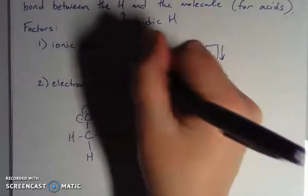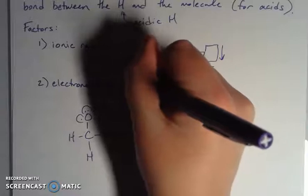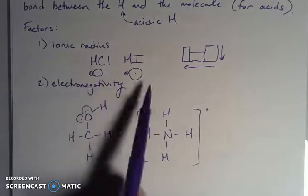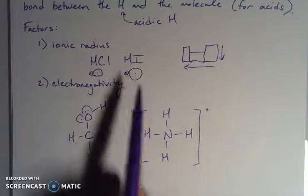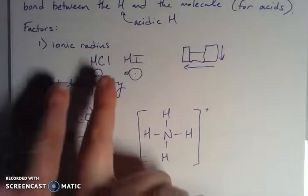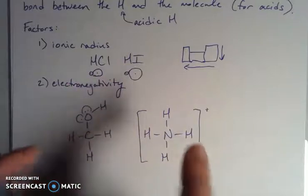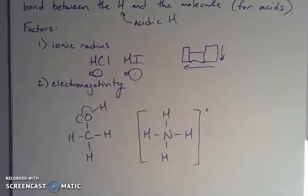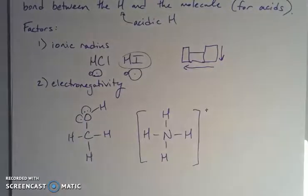This attraction happens because of overlapping orbitals, but if I have more distance between them, it's going to be easier to split these apart because the nuclei are further apart already. Closer together, they're held more tightly bound. Further apart, easier to split them apart. The stronger acid comes from the greater ionic radius. So hydrogen iodide (HI) is going to be my stronger acid.